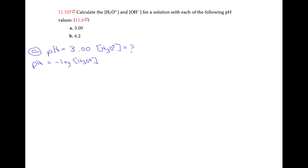Well, we can rearrange this formula and solve for the concentration of hydronium. Therefore, hydronium concentration is going to be equal to 10 to the negative of our pH value. So if we plug in the number 3.00, we get 10 to the negative 3.00.